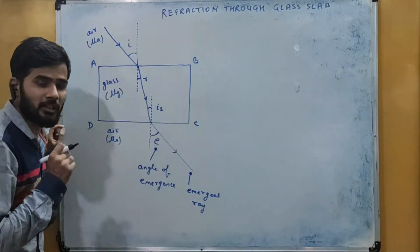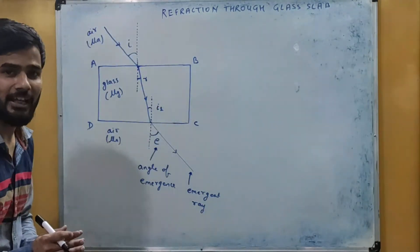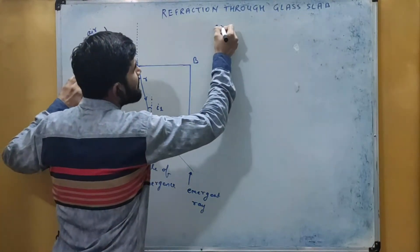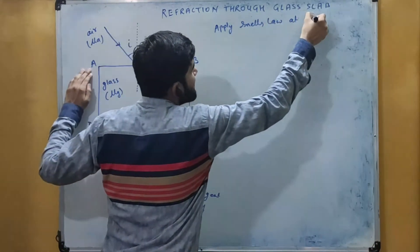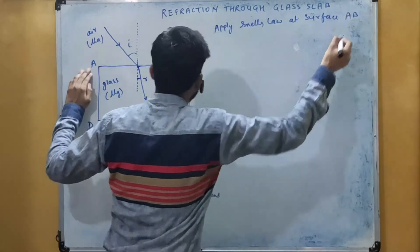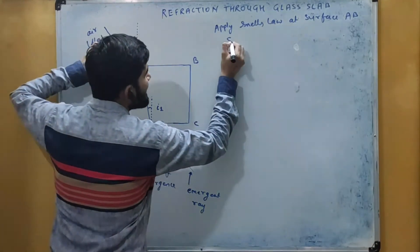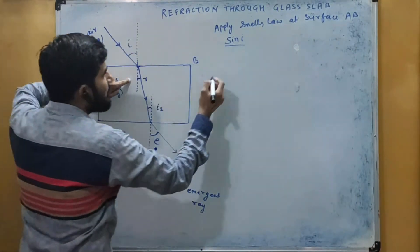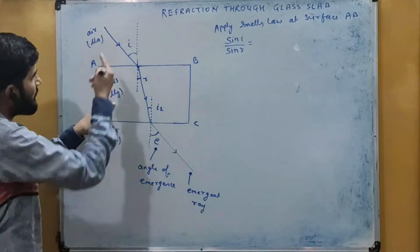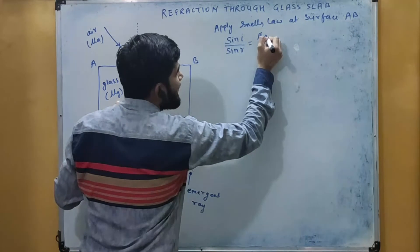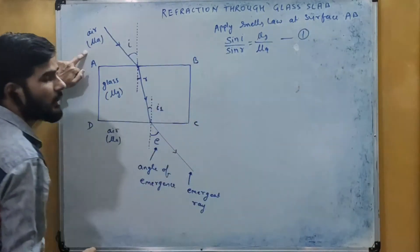This is how the refraction of a light ray takes place when it passes through a glass slab. Now let us do some mathematical calculations in this ray diagram. First of all let us apply Snell's law at surface AB. Snell's law says that sine of angle of incidence divided by sine of angle of refraction — that is sine i by sine r — equals the refractive index of medium 2 with respect to medium 1. Here medium 2 is mu g and medium 1 is air, mu a. This is equation number 1.